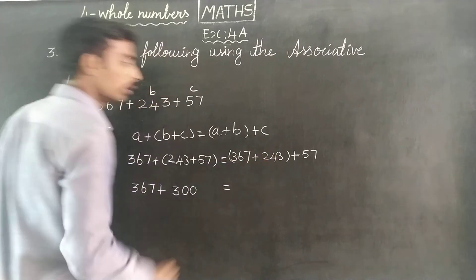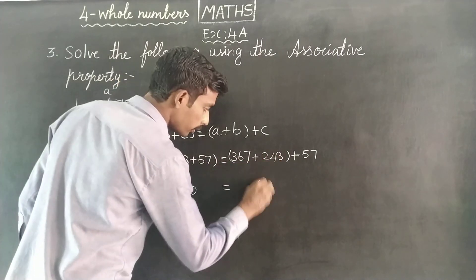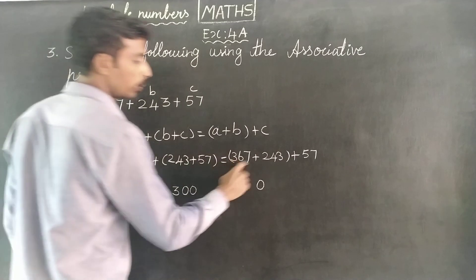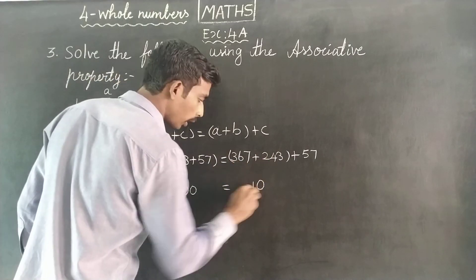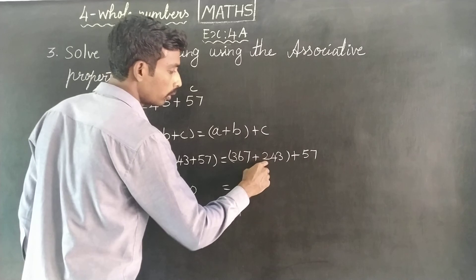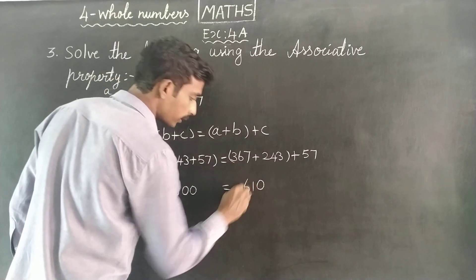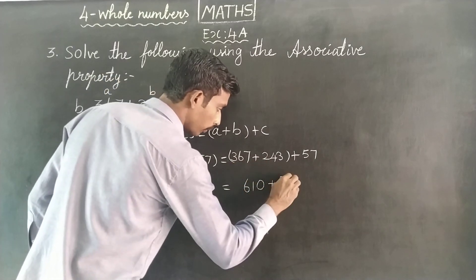On this side: 7 plus 3 is 10, carry 1. 6 plus 4 is 10, plus 1 is 11, carry 1. 3 plus 2 is 5, plus 1 is 6, equals 610. Then 610 plus 57.